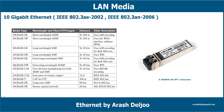10GBase-ER and 10GBase-EW use extra-long wavelength (~1550 nm) over single-mode fiber, with distances up to 40 kilometers. 10GBase-LX4 uses either SMF or MMF with 8B/10B encoding. 10GBase-CX4 uses four pairs of STP copper cable and is useful up to 15 meters, defined in IEEE 802.3AK.